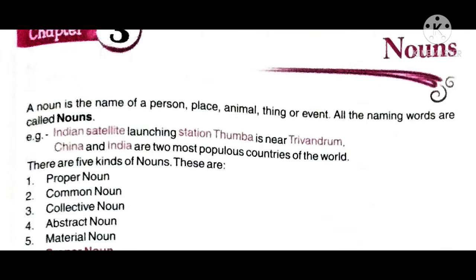A noun is the name of a person, place, animal, thing or event. You all know that the name of a person, place, animal, thing is a noun. All the naming words are called nouns. Koi bhi naming word hai, toh usko hum kya bolte hai? Nouns. So see the examples.